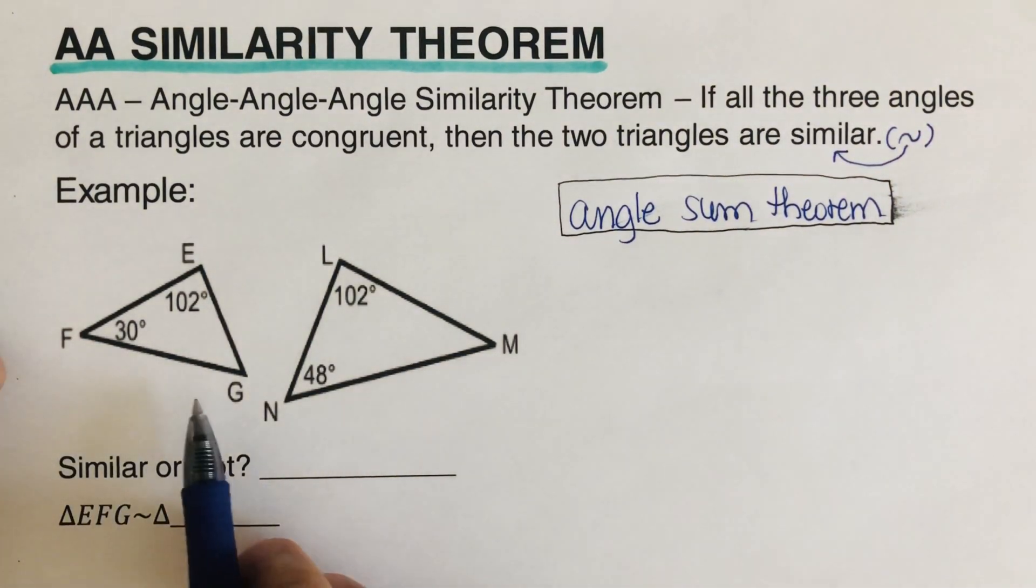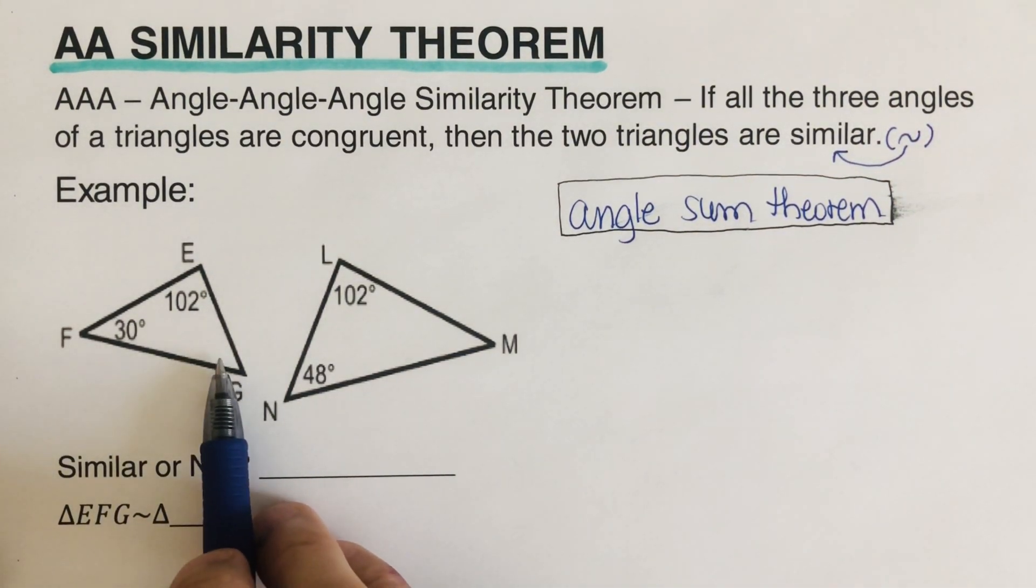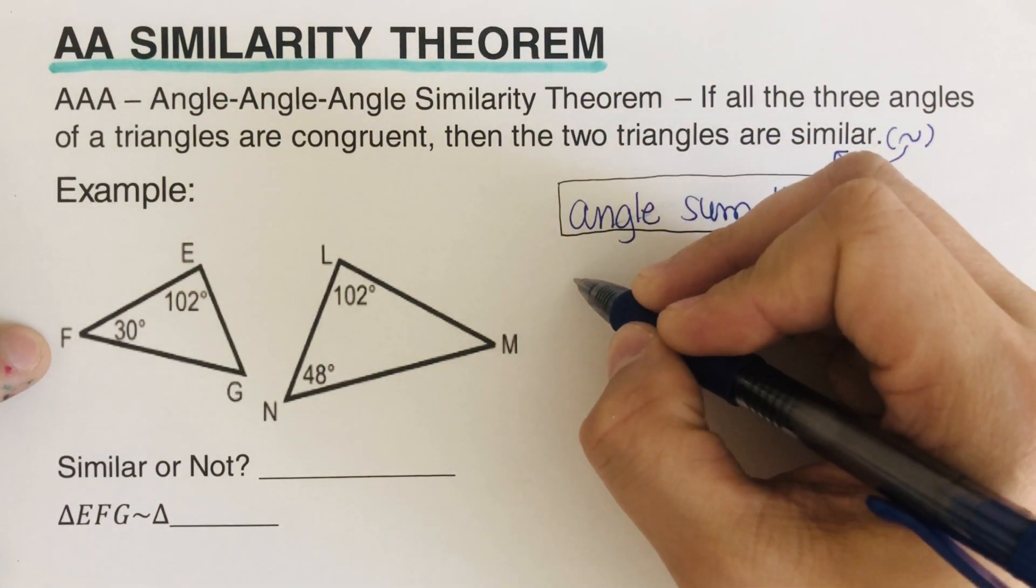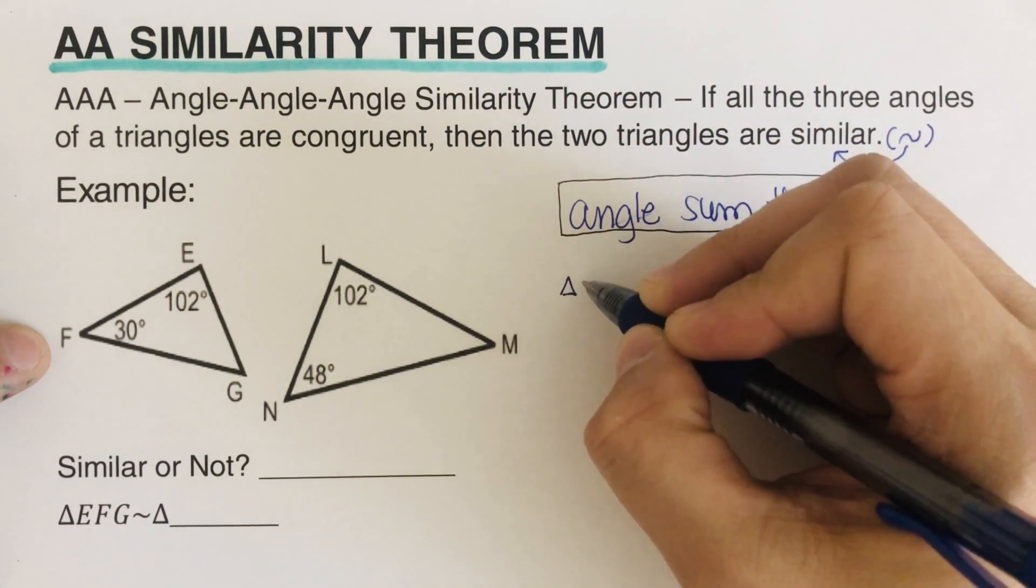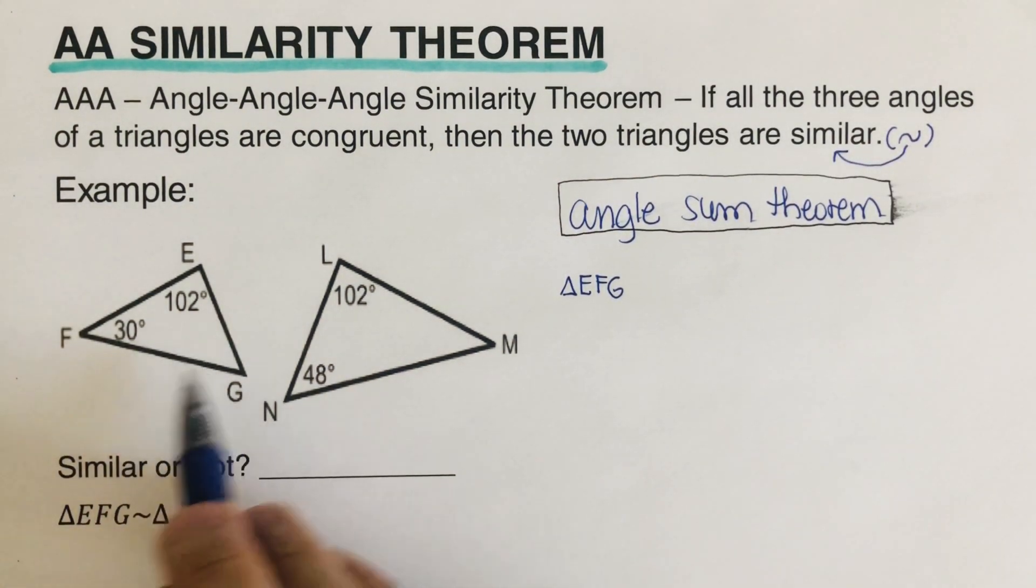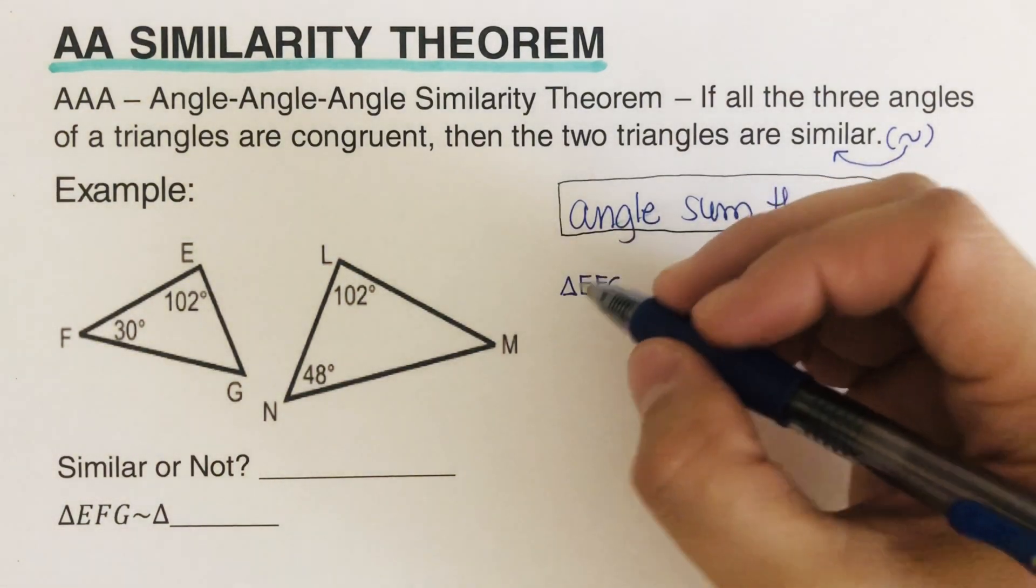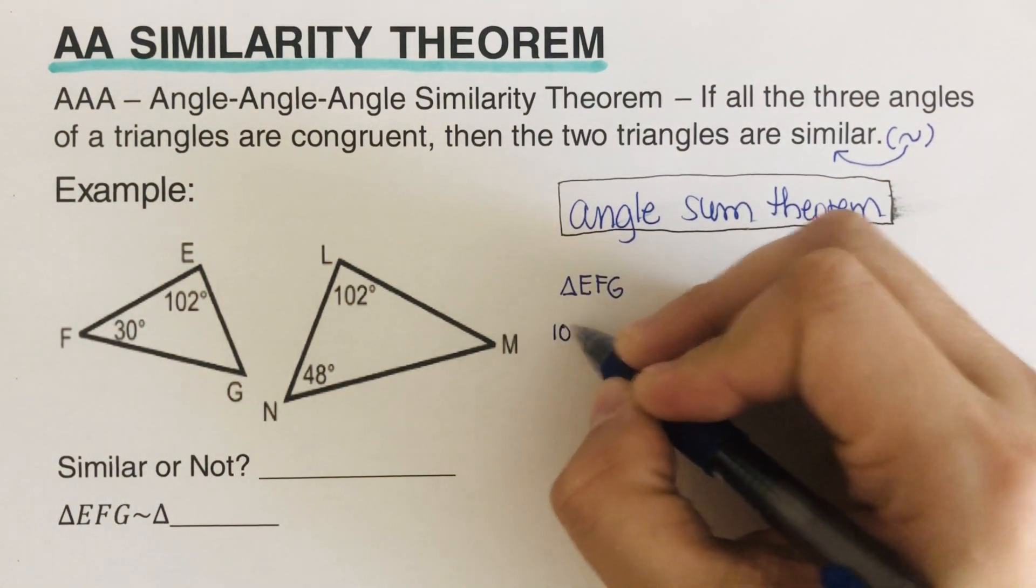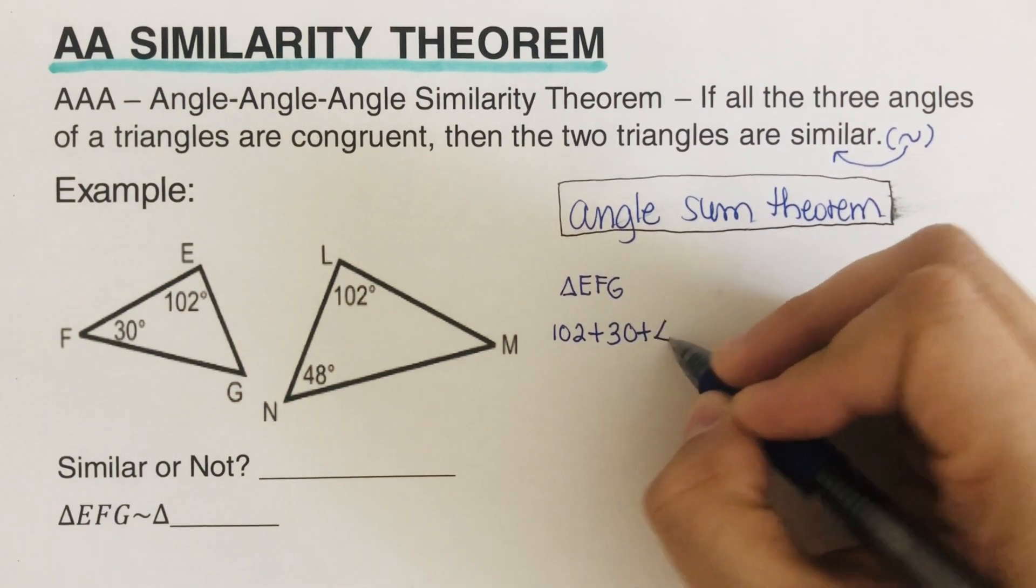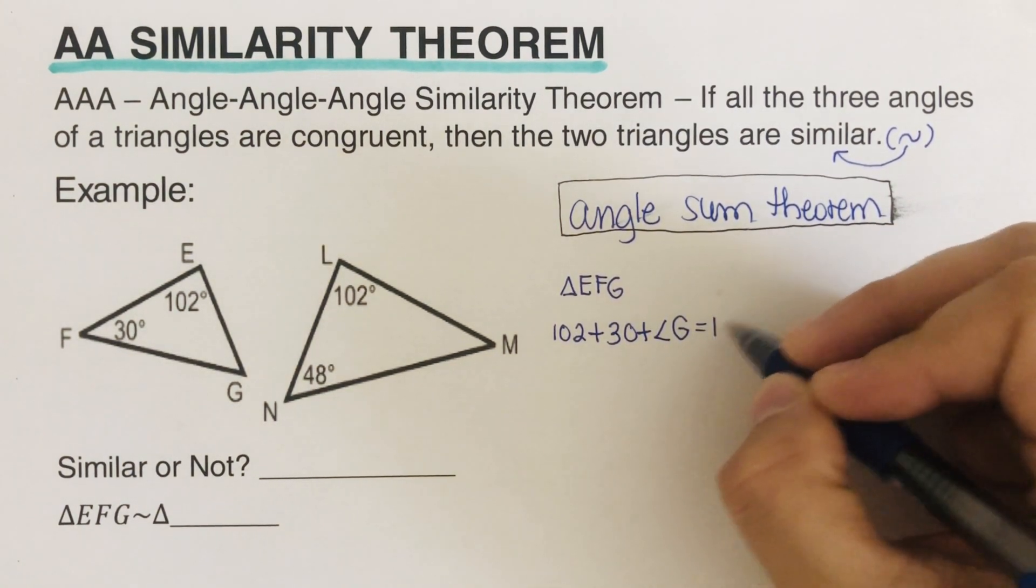So how do we solve for the missing angle for this triangle? So I'm just going to solve for triangle EFG. So we are going to add all of these equals 180. That's the Angle Sum Theorem. So that would be 102 plus 30 plus angle G is equal to 180.